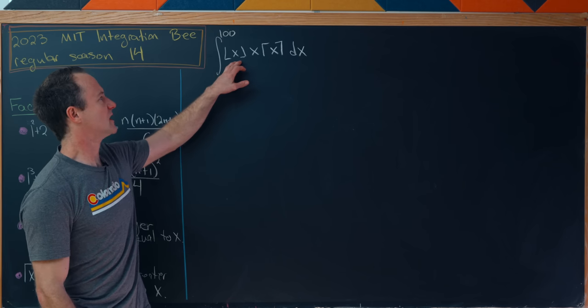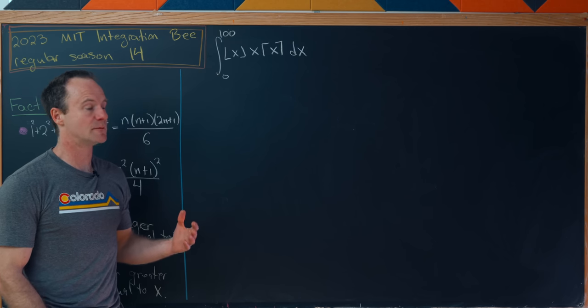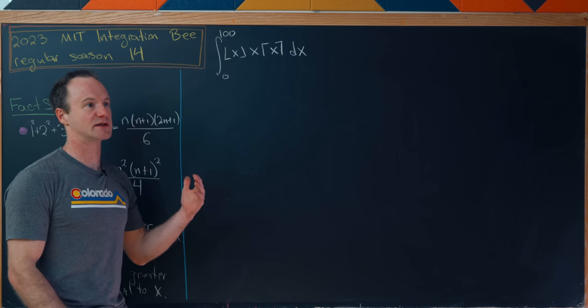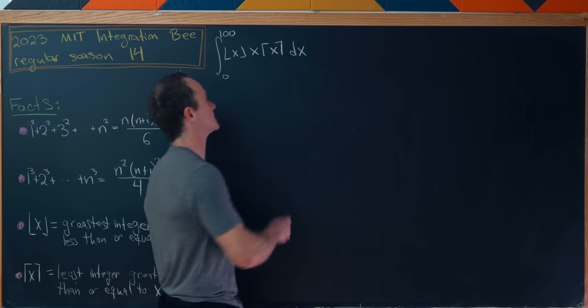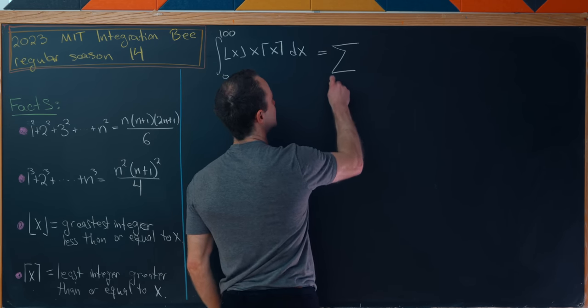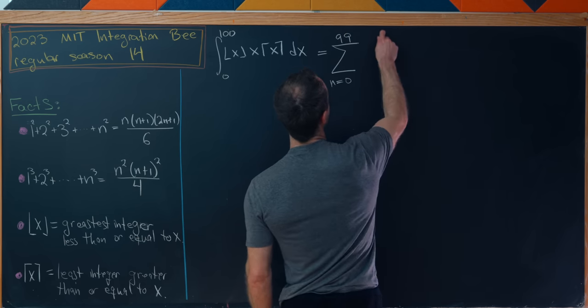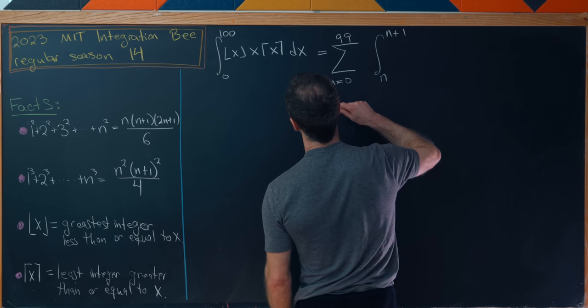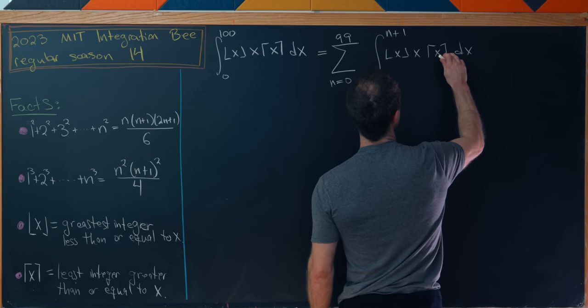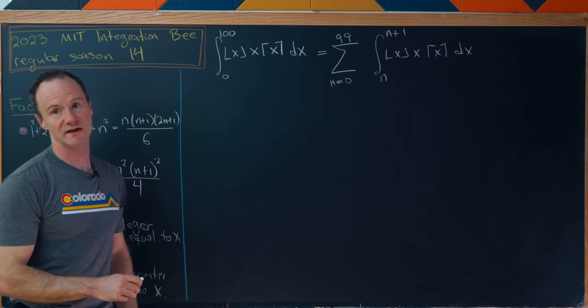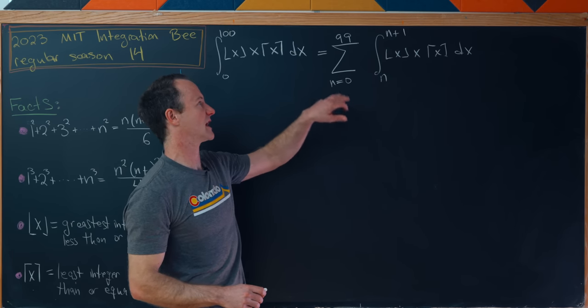So let's notice that this floor function and the ceiling function are both essentially piecewise functions that are constants on intervals with endpoints that are consecutive integers. So we'll break this up into those types of pieces. This will be the sum as n goes from 0 up to 99 of the integral from n to n plus 1 of the floor of x times x times the ceiling of x dx. So I haven't applied anything about the floor or the ceiling yet. I've just broken this up into pieces.